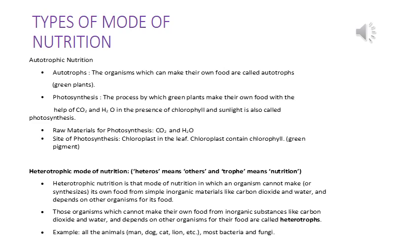In heterotrophic mode of nutrition — 'hetero' means other, 'trophos' means nutrition — organisms cannot make their own food from simple inorganic materials like carbon dioxide and water, and must depend on other organisms for food supply. These are called heterotrophs. Examples include man, dog, cat, lion, most bacteria, and fungi.